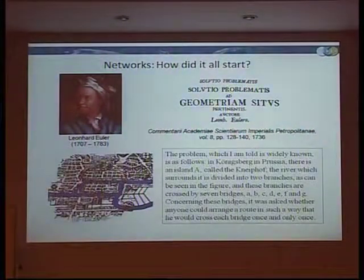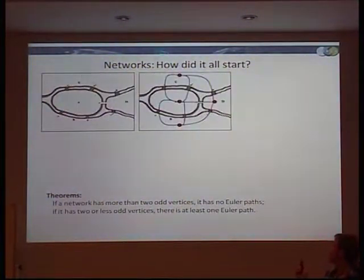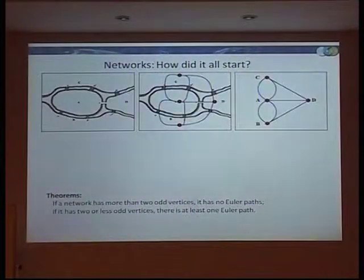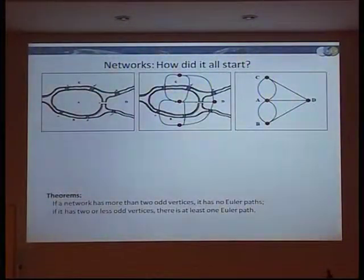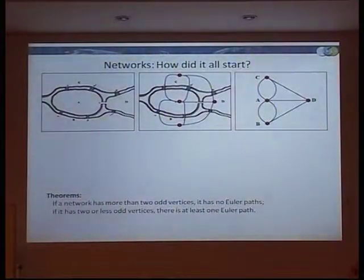This is a map — these are bridges. There is no path that connects the bridges. And actually, from these steps comes the first graph theory that we have. It's basically that if you have more than two odd vertices, or odd nodes...